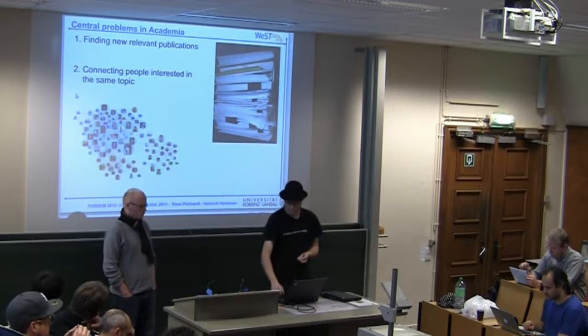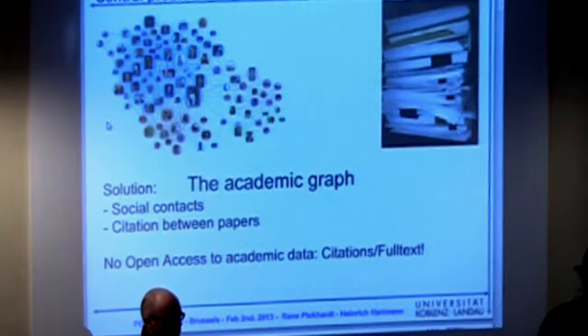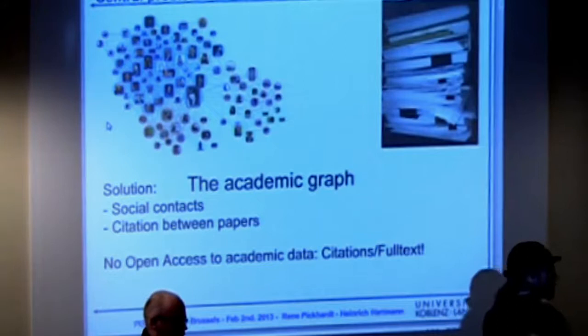We think there is a solution to this, and this is the academic graph. The academic graph mainly consists of two things: the social graph, where I can talk to Heinrich about a topic, and the citation graph, because once I cite someone, there is a lot of knowledge inside that citation.